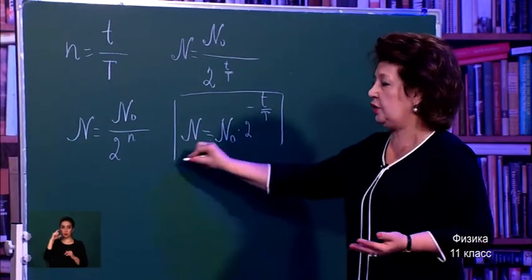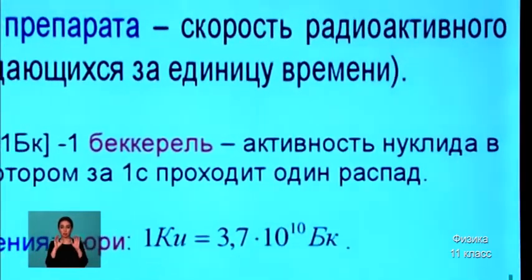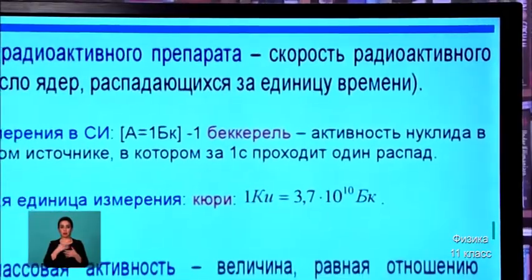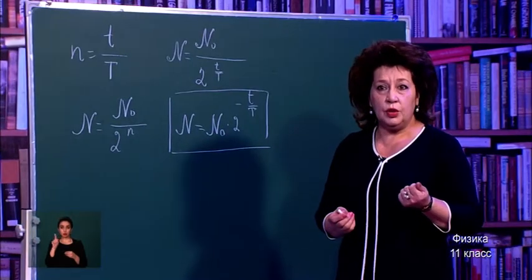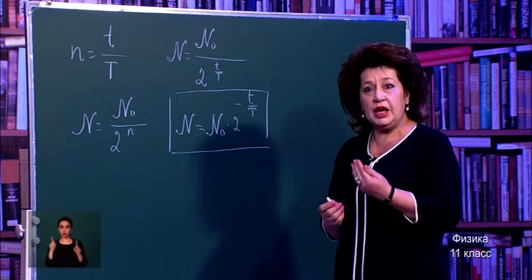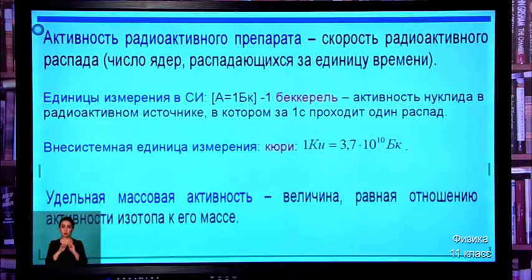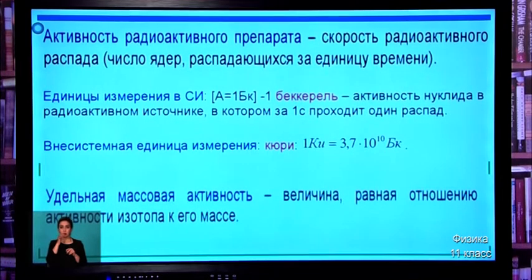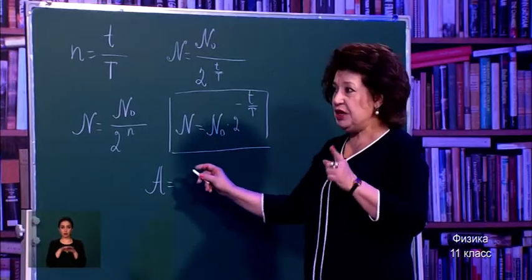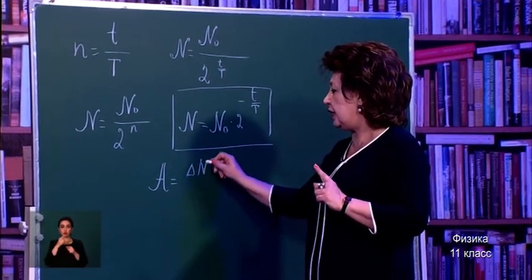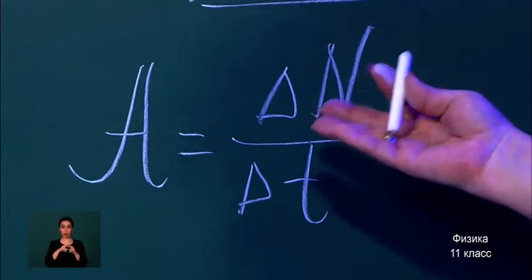In addition to the law of half-life, there is also the concept of activity of a radioactive substance. What is it? It is the rate of radioactive decay per unit time — the number of nuclei that decay per unit time. Activity is denoted by the letter A and equals the change in number of particles ΔN divided by the time interval Δt: A = ΔN / Δt.